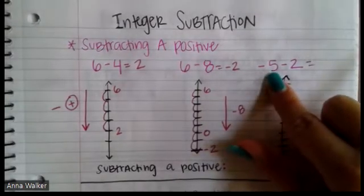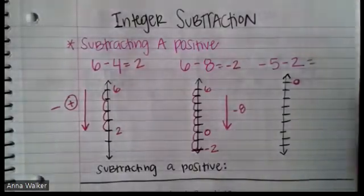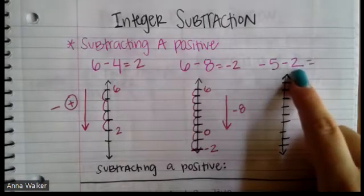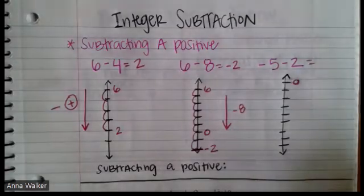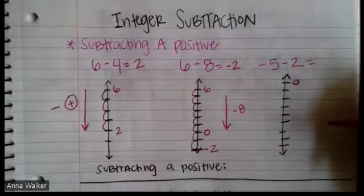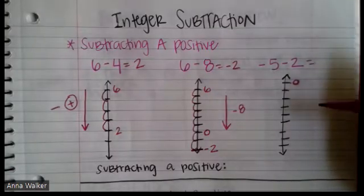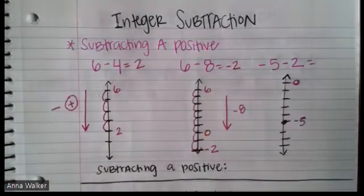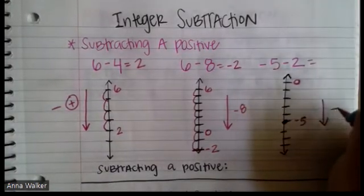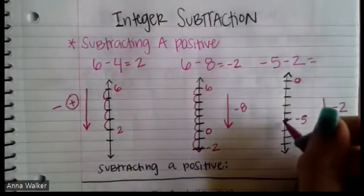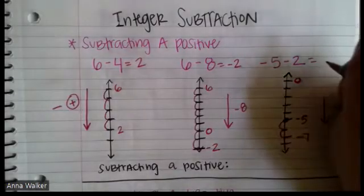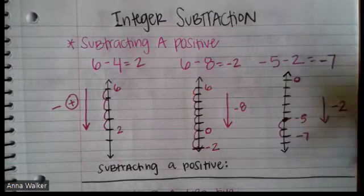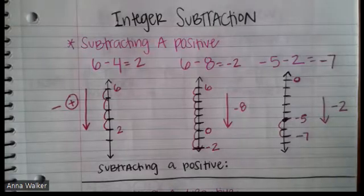Now let's start at a negative number: negative five minus positive two. Locating negative five — five below zero — we subtract two by going down the number line two spots: one, two. This ends up at negative seven. When we subtract two from negative five, we go farther down into the negatives and end up at negative seven.